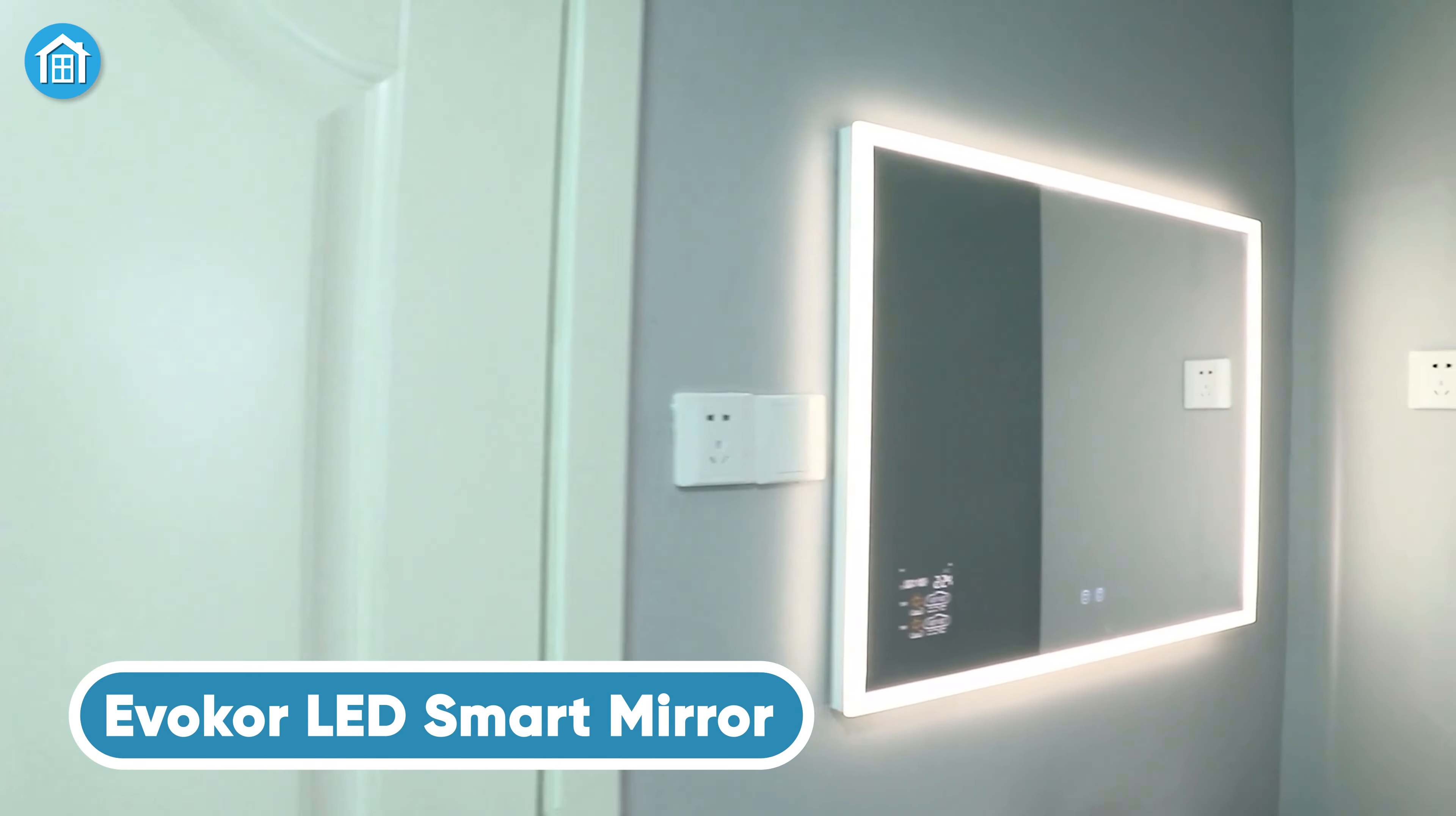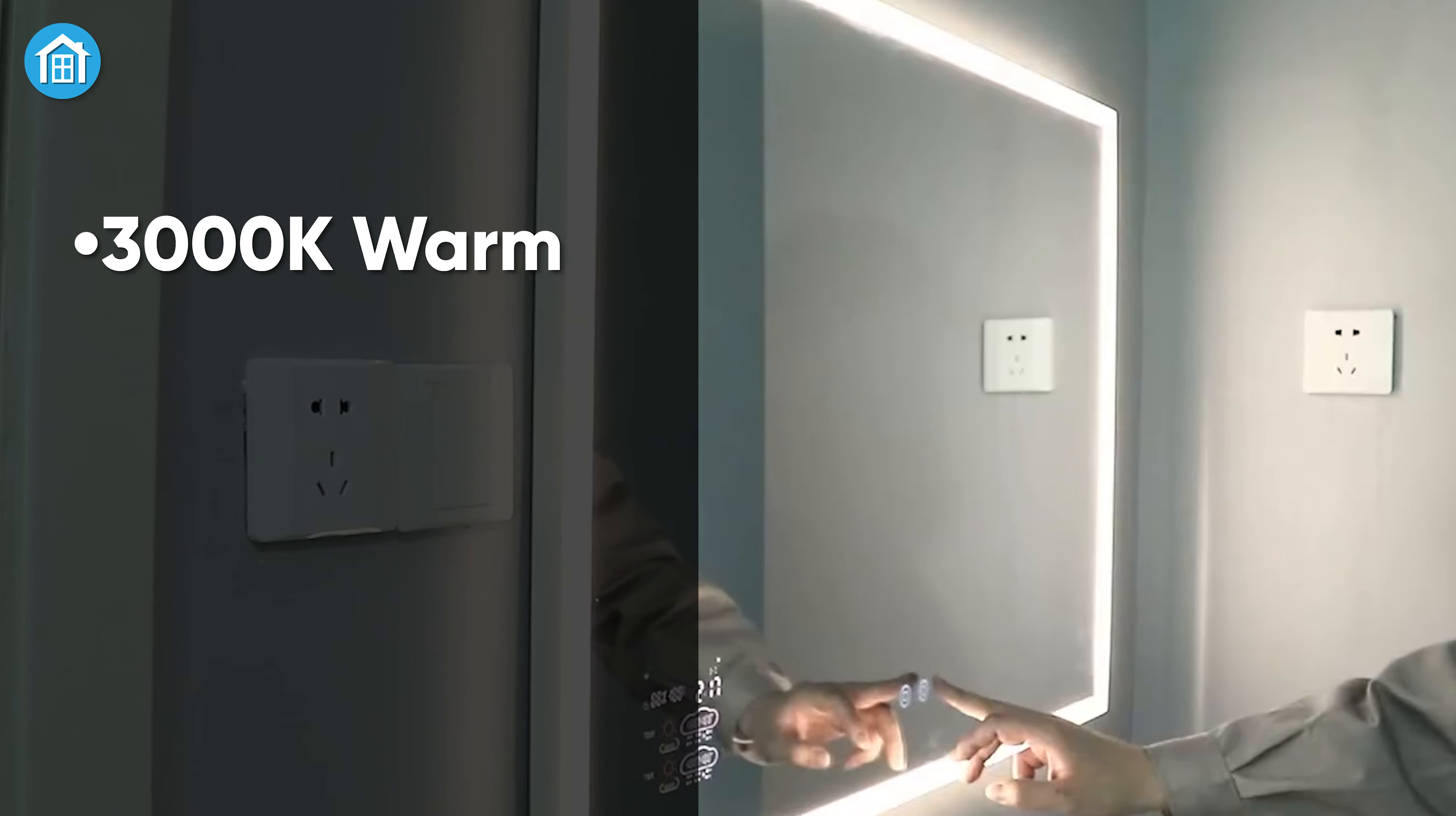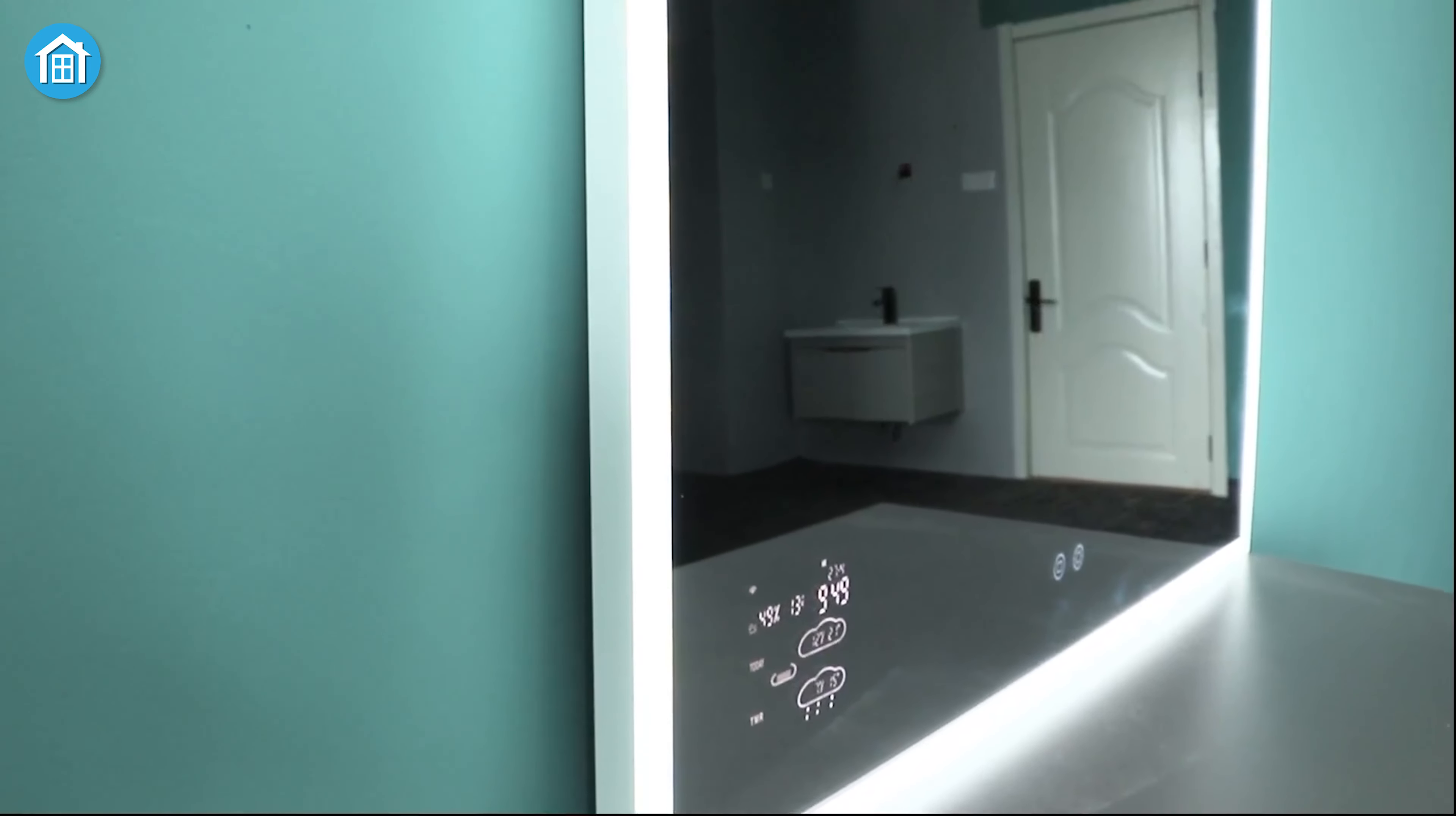Introducing the EvoCore LED Smart Bathroom Mirror, an essential blend of innovation and practicality for your daily routine. This mirror redefines functionality with a Smart Touch sensor switch that offers three adjustable light settings: 3000K warm, 4500K natural, and 6000K white, ensuring optimal illumination at any time of day.